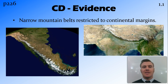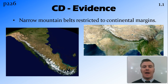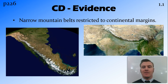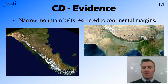For example, in South America we have the Andes, and between India and Eurasia we have the Himalayas. These are quite narrow strings of mountains, and he thought this might show the movement of the continents.